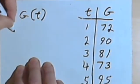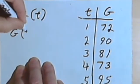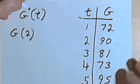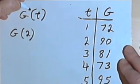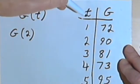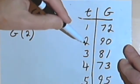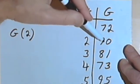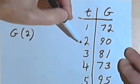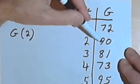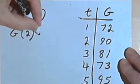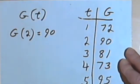And now if I'm told to evaluate, let's say, G of 2, all I have to do is find out when the input column has a 2 in it. In other words, when t equals 2 and find out what the output is there. Well, the output when t is 2 is 90, so G of 2 equals 90.